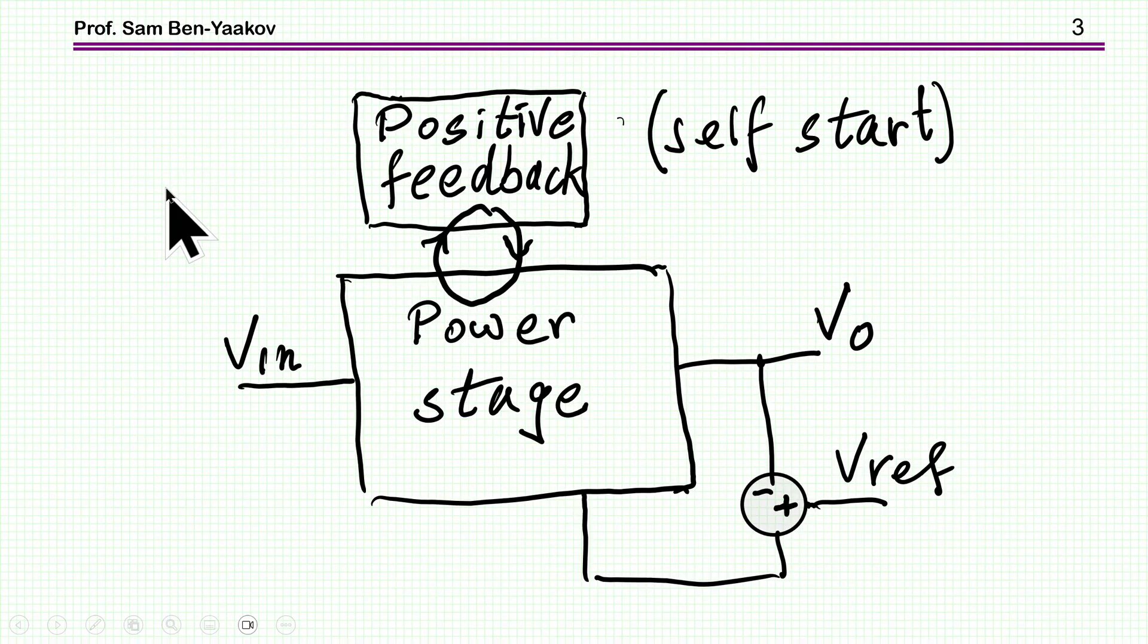Let me say a few words about what is really needed for a self-oscillating converter. First of all, we need a power stage, of course, input voltage, then output voltage. Then we have to have some mechanism for stabilizing the output, the feedback. So we need a reference. The output is compared to the reference. And then what we need in a self-oscillating converter is some mechanism of positive feedback, because otherwise there is a danger that the system will be stuck or frozen to a given point and will not oscillate.